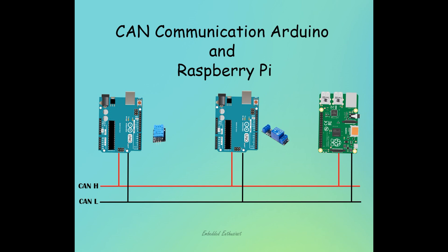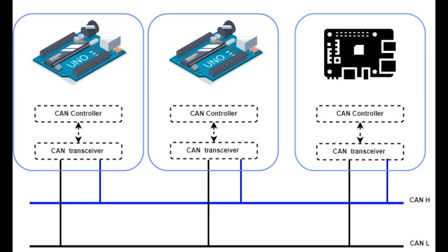In this video we are trying to do a CAN communication between Arduino and Raspberry Pi. This figure can be considered as the system overview for the experiment. The nodes are created out of Arduino UNO and Raspberry Pi — two Arduino UNOs and one Raspberry Pi. Since Arduino UNO inherently doesn't have a CAN controller, we used a CAN shield which includes a CAN controller and CAN transceiver. Similarly, for Raspberry Pi we have a CAN shield with a CAN controller and CAN transceiver. All these nodes are connected using the CAN bus.